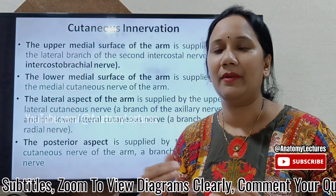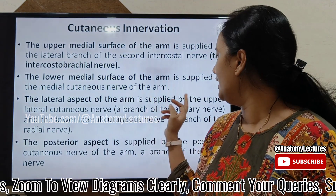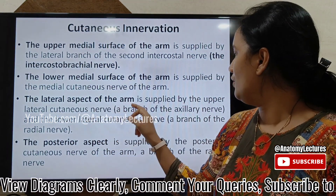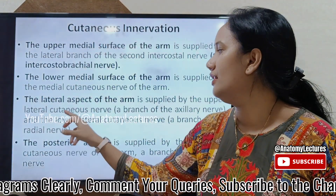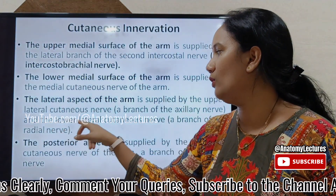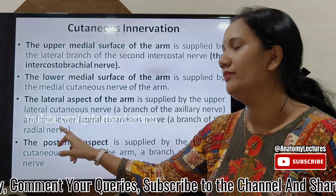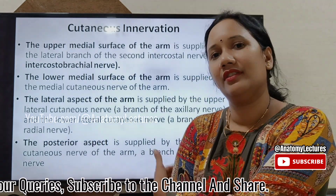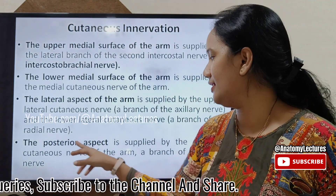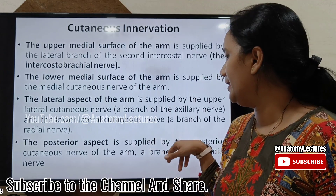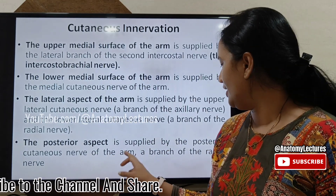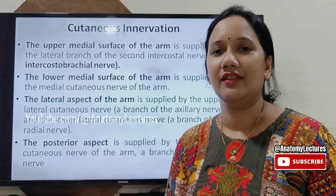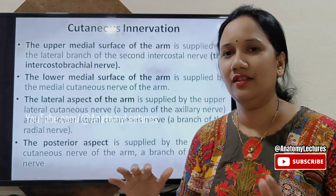The lateral aspect of the arm is supplied by the upper lateral cutaneous nerve, which is a branch of the axillary nerve. In the lower part, it is supplied by the lower lateral cutaneous nerve, which is a branch of the radial nerve. The posterior aspect of the arm is supplied by the posterior cutaneous nerve of the arm, which is also a branch of the radial nerve. This covers the cutaneous nerve supply of the arm as a whole.